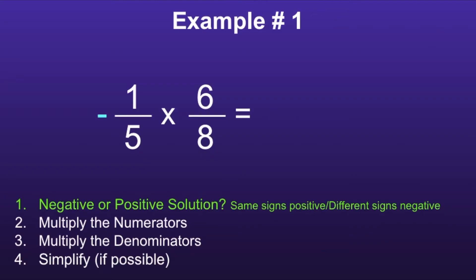Since the first number is negative and the second number is positive, this would mean different signs negative. Since one is positive and one is negative, we will know the solution will be negative.